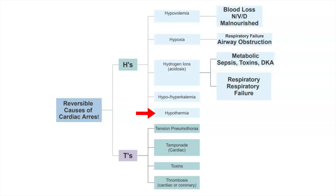And then we're going to want to protect the cardiac muscle by giving them calcium. Our last H is hypothermia — suspect this for a patient scenario in which they are found down outside in extreme weather, and for these patients we're going to want to rewarm them. Now on to the T's. The first T is tension pneumothorax, which is air that accumulates in the pleural space. Think about trauma patients and those who are already vented. For these patients, we're going to want to get a chest x-ray, and treatment consists of needle decompression and possibly chest tube placement.